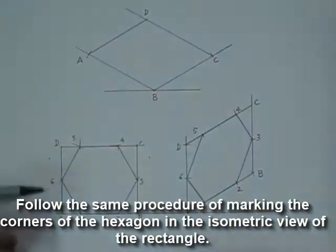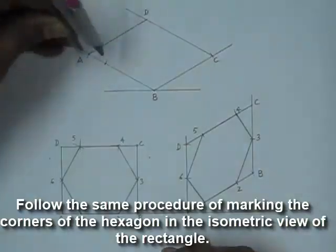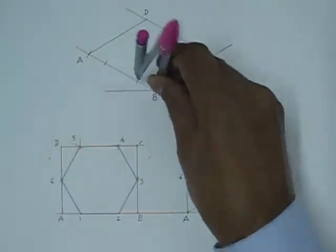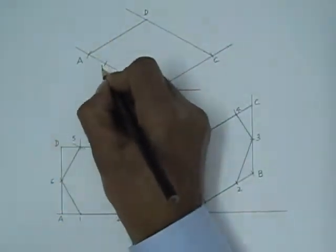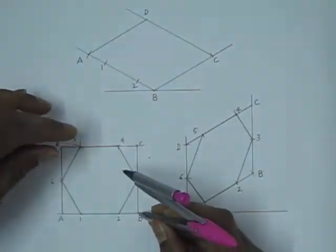Now we will follow the same procedure as we followed for the front view. That means we will measure the distance of each corner of the hexagon from the corners of the rectangle. And we will mark those points.